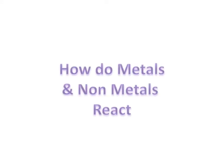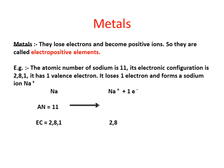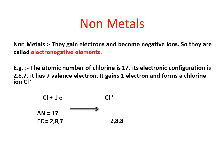So how do metals and non-metals react? Metals lose electrons and they become positive ions, so they are called electropositive elements. For example, sodium loses its one electron and it becomes electropositive. Non-metals gain electrons and become negative ions, and they are referred to as electronegative elements. For example, chlorine when it reacts with sodium gains one electron from sodium and becomes the chloride ion, becoming electronegative in nature.